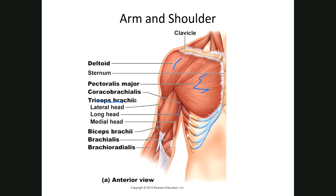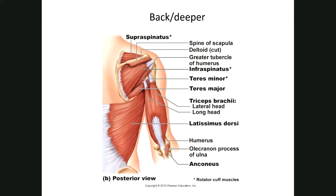This is the biceps brachii; brachialis is underneath it, and brachioradialis is down here. This cut view shows supraspinatus, infraspinatus, teres minor, teres major, and the triceps — you can see the lateral head and long head nicely. The triceps is on the posterior part.